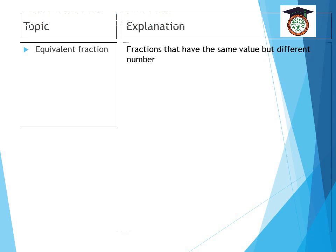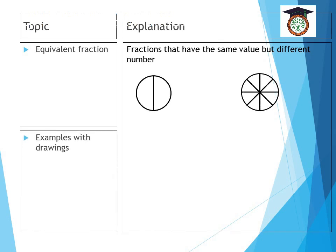I will give you an example of two equivalent fractions. If I take this shape and I colored one side, the fraction that is being represented here is one half. In the other shape, the circle is cut into eight pieces and we want to color the half of this circle. So I will color four of eight pieces.